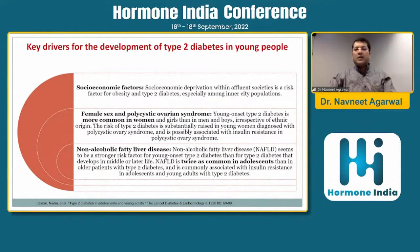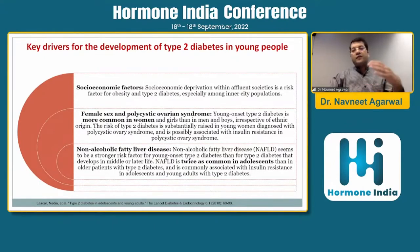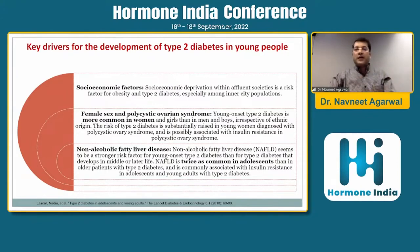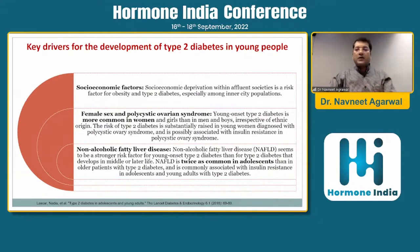Some socio-economic factors may also be responsible. Female sex and PCOS show a preponderance of insulin resistance in that population, placing them at risk of developing type 2 diabetes. Non-alcoholic fatty liver disease seems to be a stronger risk factor for young-onset type 2 diabetes.